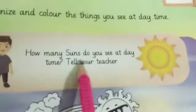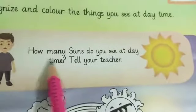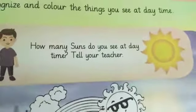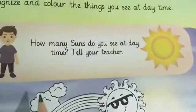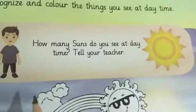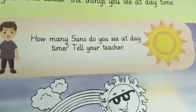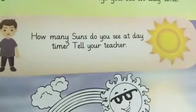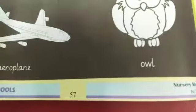How many suns do you see at daytime? One sun — we see one sun at daytime.